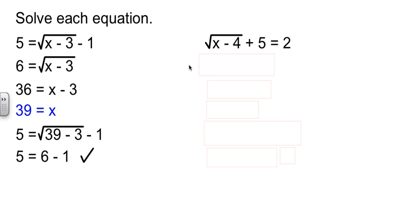Let's tangle with another one. We have a square root of x minus 4 plus 5 is equal to 2. Our job is to isolate that square root, get it alone. So let's subtract the 5 over.